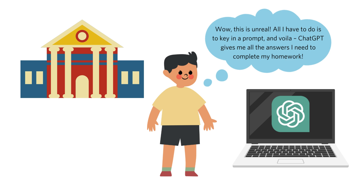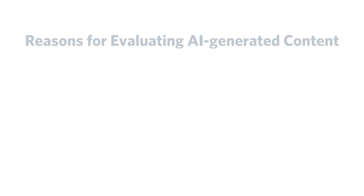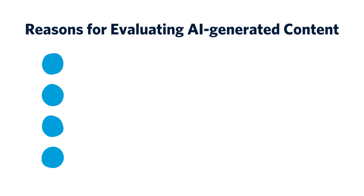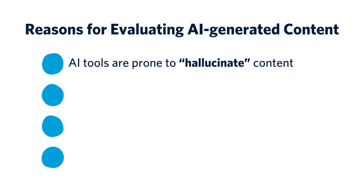Because it's fast and easy, Ash is tempted to use the information generated by ChatGPT without thinking any more about it. But here are four reasons why Ash should think more deeply about AI content. First, AI tools are prone to hallucinate content. Hallucinations are content that may be made up or inaccurate.